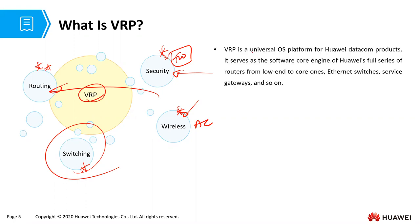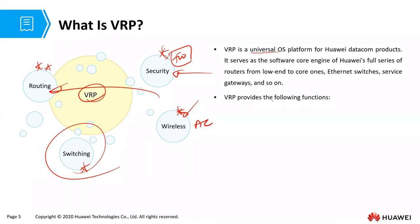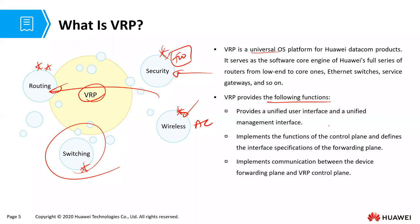VRP is a universal OS, as I've mentioned already, and it provides a number of functions — beginning from providing a unified user interface and unified management interface, to implementing the functions of the control plane and defining the interface specifications of the forwarding plane, and also implementing communication between the device forwarding plane and the VRP control plane.